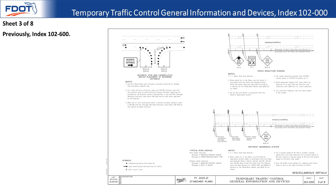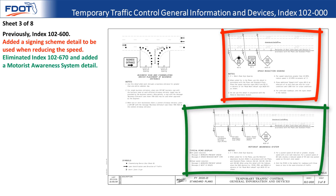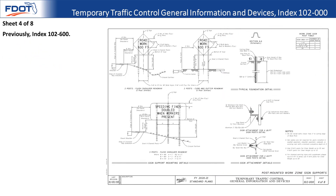Sheet three of eight is the new miscellaneous detail sheet. Some of the bigger additions to the index are the speed reduction signing — a detail that can be applied as a general rule to any speed reduction — and the motorist awareness system (MAS), which was previously index 102-670. The MAS is now a detail that can be applied to any of the different multi-lane lane closure scenarios and can be shown in a phasing plan or specified on a note sheet.